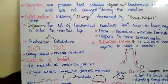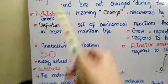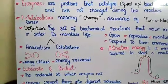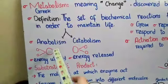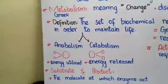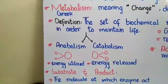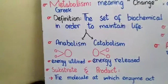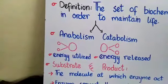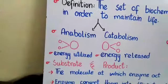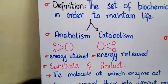Metabolism has two further categories: anabolism and catabolism. All the chemical reactions occurring in your body together constitute metabolism. Anabolism is a biochemical reaction in which larger molecules are synthesized from smaller ones — the smaller molecules join together to form a larger molecule. During this process, energy is utilized; energy is consumed when small molecules combine to form a bigger molecule.